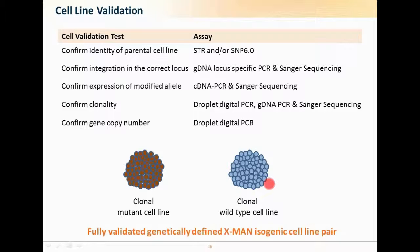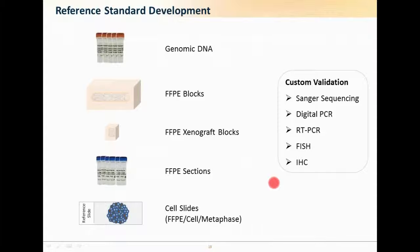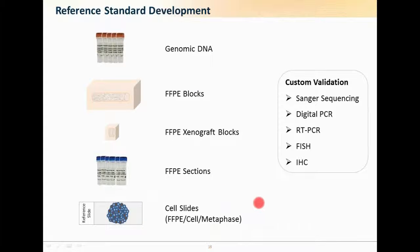We've taken the mutant and wild-type cell lines to develop reference standards in different formats: genomic DNA (wild-type or mutant alone, or mixed as single-plex or multiplex), FFPE blocks using the cell lines, FFPE xenograft blocks where we inject cell lines into mice, and FFPE sections from either xenograft or cell line blocks. We've also started generating cell slides in FFPE format, cell format, or metaphase on request. Depending on the reference standard generated, validation approaches include Sanger sequencing, digital PCR, RT-PCR, FISH, or IHC.